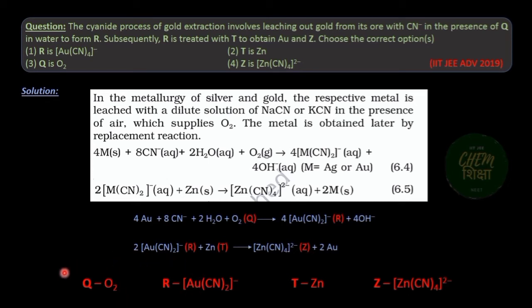So Q is oxygen molecule, R is di-cyano aurate 1- complex, T is zinc, and Z is tetra-cyano zincate 2- complex.